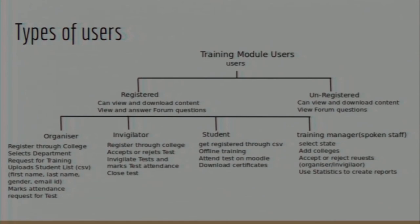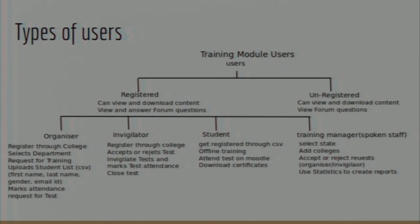The third main role is the student — the person who does the actual training on our website, views and learns from our content, and attends the test. Students need not register manually; they are registered through CSV by an organizer. Since many colleges in rural areas lack internet access, students can also do offline training by downloading our content free of cost. If they want a certificate, they appear for the test and download it afterward.